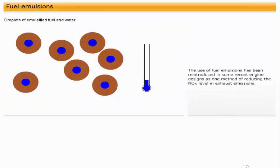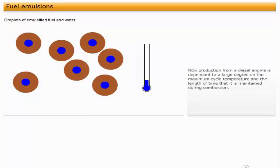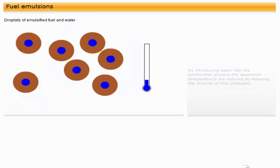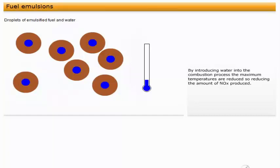The use of fuel emulsions has been reintroduced in some recent engine designs as one method of reducing the NOx level in exhaust emissions. NOx production from a diesel engine is dependent to a large degree on the maximum cycle temperature and the length of time that it is maintained during combustion. By introducing water into the combustion process, the maximum temperatures are reduced, so reducing the amount of NOx produced. This, however, can reduce engine efficiency and lead to an increase in specific fuel consumption.